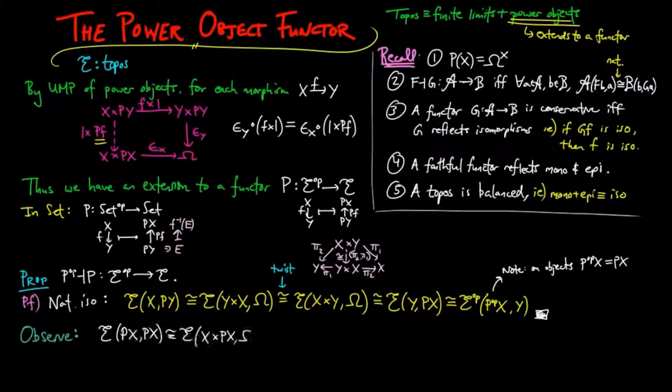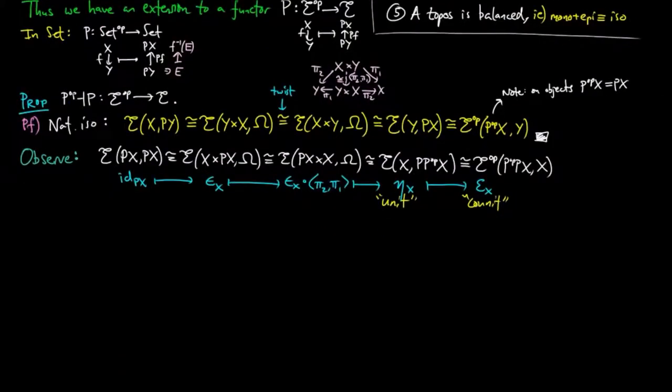Observe that the unit is the unique morphism such that the following diagram on the right commutes, and the counit is the opposite morphism of the unit in the opposite category of E.